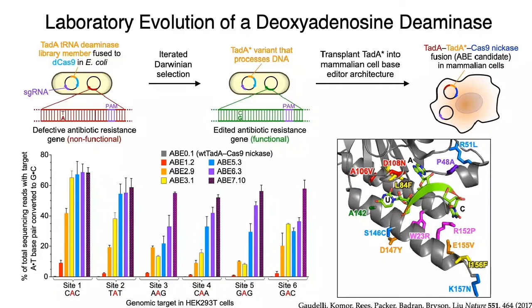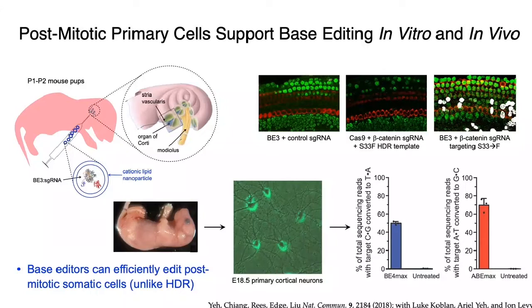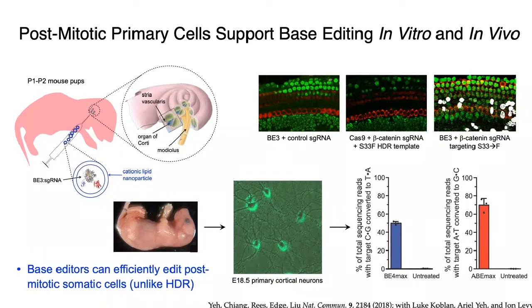The result was the first editing agent capable of installing targeted AT-to-GC edits in human cells. Base editing has proven quite general and can function efficiently even to edit post-mitotic primary cells in vitro and in vivo. Shown here is the use of an ABE or a CBE to edit post-mitotic primary cells in the inner ear and primary cortical neurons in mice. All possible types of off-target base editing have now been studied in depth and minimized for both CBEs and ABEs by labs including Keith Joung's, Hui Yang's, Kaisa Gao's, Nicole Gaudelli's, and our own.